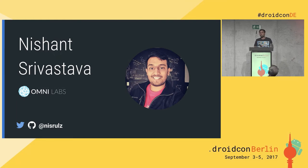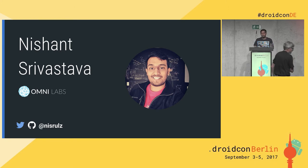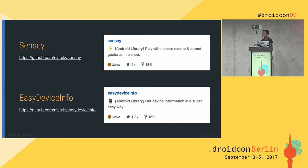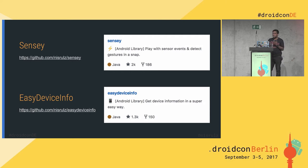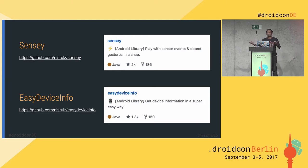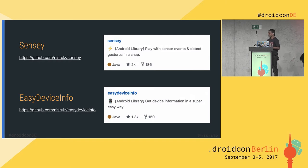While at work and in open source, I've built a lot of libraries. Two of those I'm really proud of are Sensi and EasyDeviceInfo. Sensi is a basic Android library which makes detecting gestures — such as a wrist twist, shake detection, tilt, or rotation — super simple. You just have a particular listener and it tells you that a particular gesture is there.